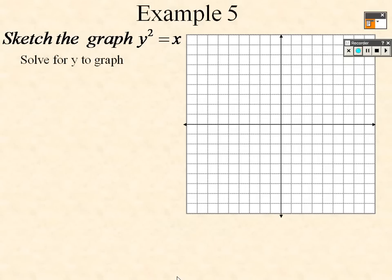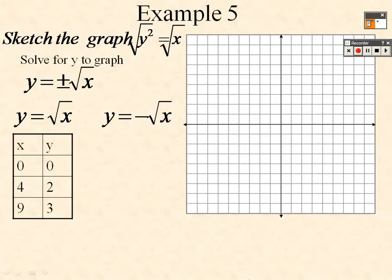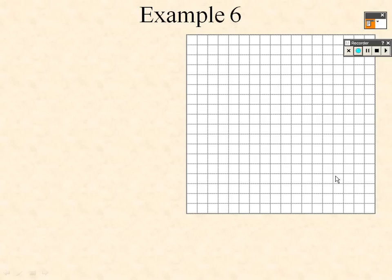To sketch y² = x, solve for y by taking the square root of both sides, giving y = ±√x. Graph both √x and -√x by plugging in points. Choosing x = 0 gives y = 0; x = 4 gives y = ±2; x = 9 gives y = ±3. Plot the points (0,0), (4,2), (4,-2), (9,3), and (9,-3) and connect them to form the graph. We'll continue with example 6 when we return.